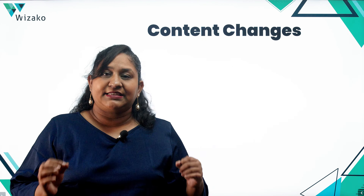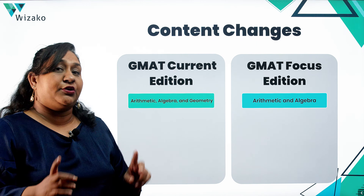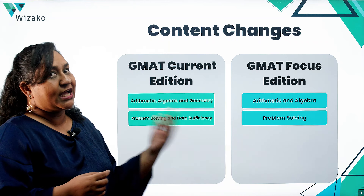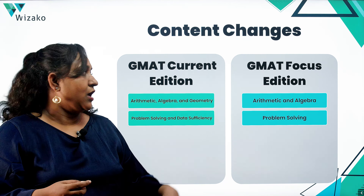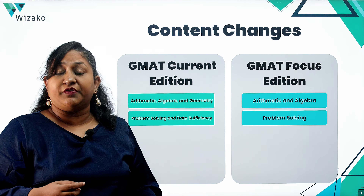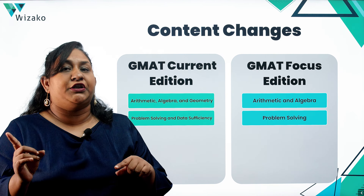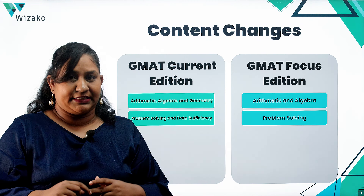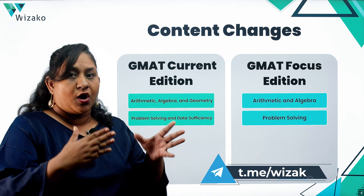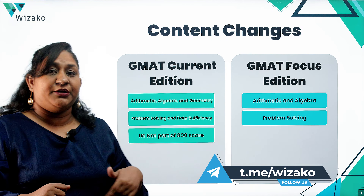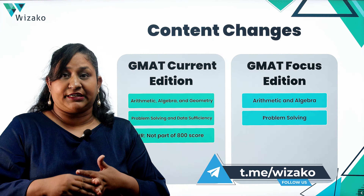In Quant, the current edition has three syllabus areas: arithmetic, algebra, and geometry. Geometry is being removed in the Focus Edition — you will only have arithmetic and algebra questions. Within Quant, you currently have two question types: problem solving and data sufficiency. In the Focus Edition, you will only have problem solving questions. Data sufficiency is not being removed entirely — it is being moved into the new Data Insights section.